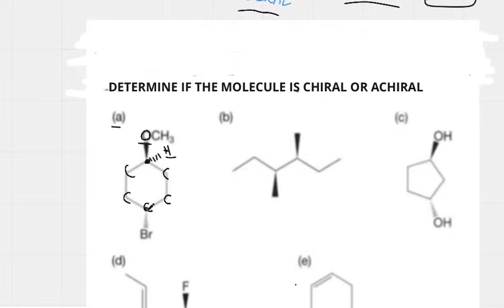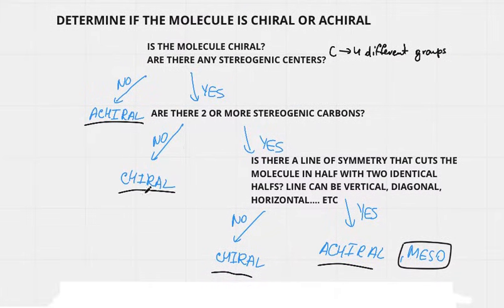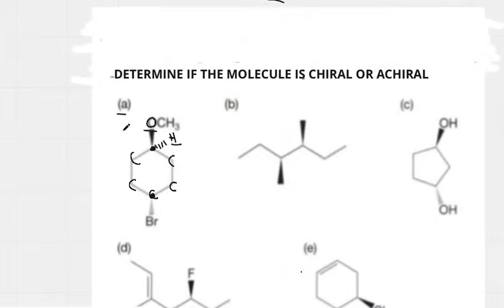We can do the same for the bottom carbon — going up to the right and up to the left, there is also no difference. This carbon is also not stereogenic. So looking at our chart: are there any stereogenic centers? The answer is no, therefore this molecule is achiral.